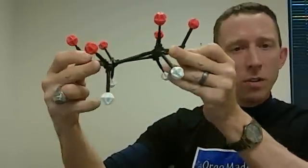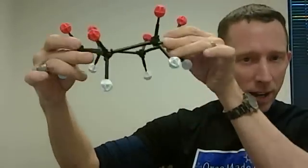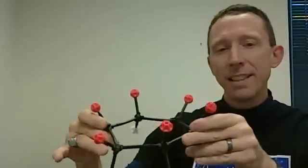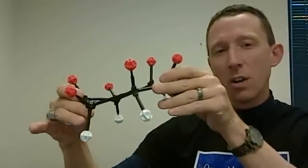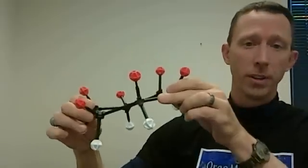So, notice that all the red substituents are on one side of the ring, and all my white substituents are on the other side of the ring. We would say that these red substituents are all cis to one another, and that these white substituents are also all cis to one another.